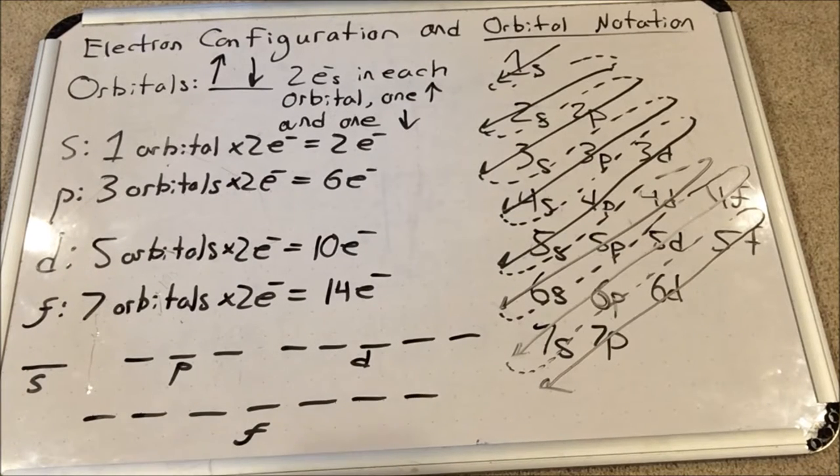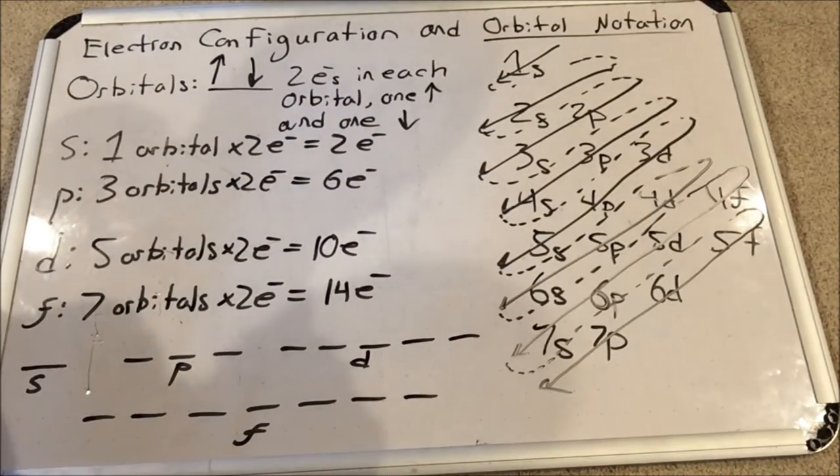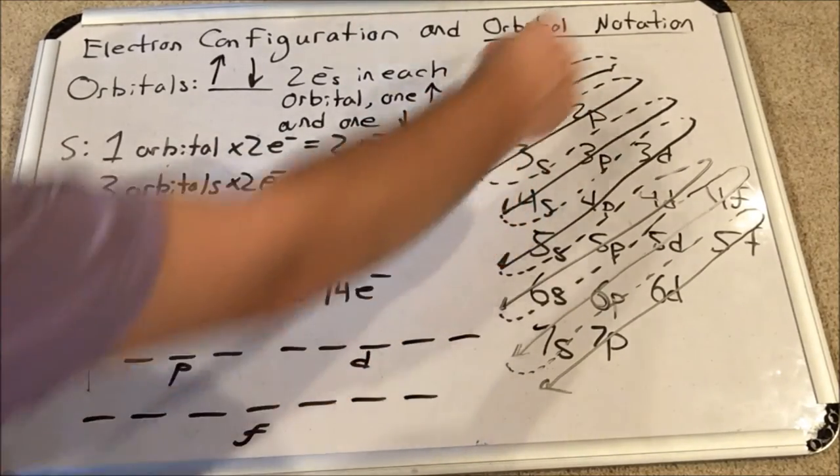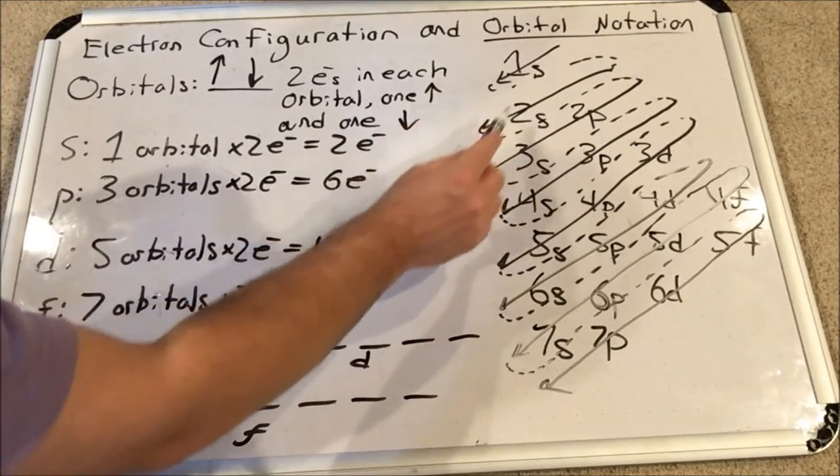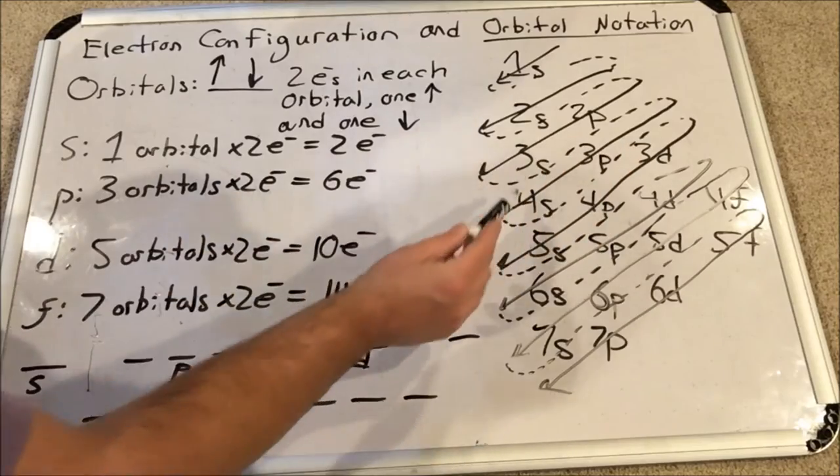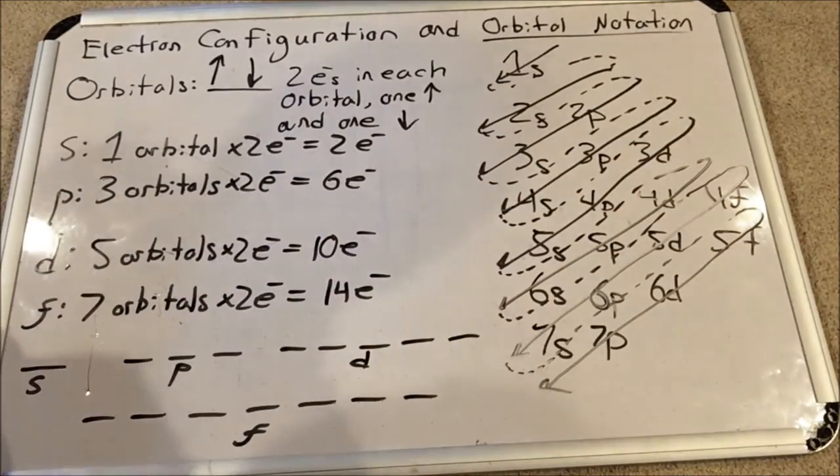So over here I have the chart of the filling order that we used in our last video. We start by filling 1s and then we go through this pattern. At first everything's normal: 1s, 2s, 2p, 3s, 3p, and then we skip 3d, go to 4s, and then everything gets a little wonky. So it's really good to have this filling order in front of you.